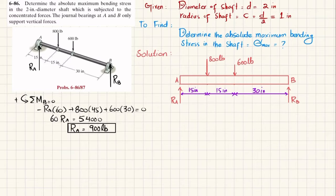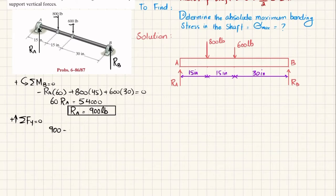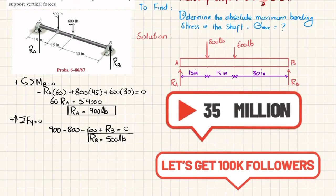Now we find R_B using the equation: sum of all forces in the Y-direction equals zero, with upward forces taken as positive. R_A (900, upward) minus 800 minus 600 plus R_B (upward) equals zero. From here, R_B equals 500 pounds.